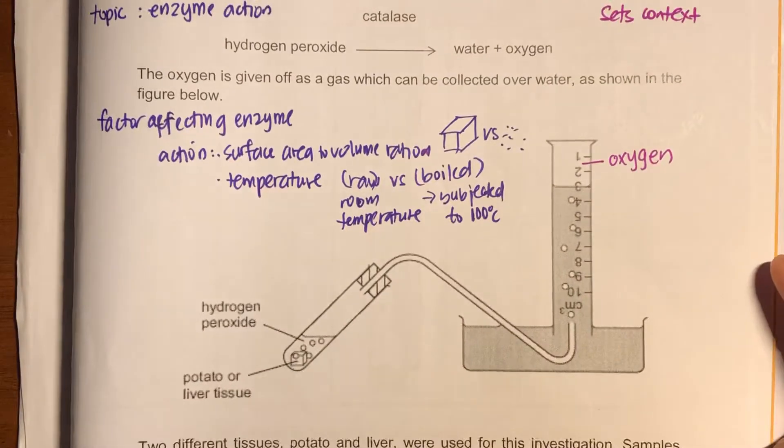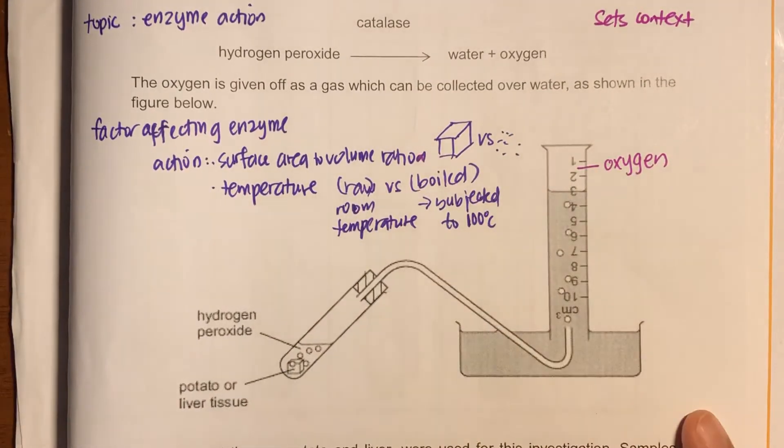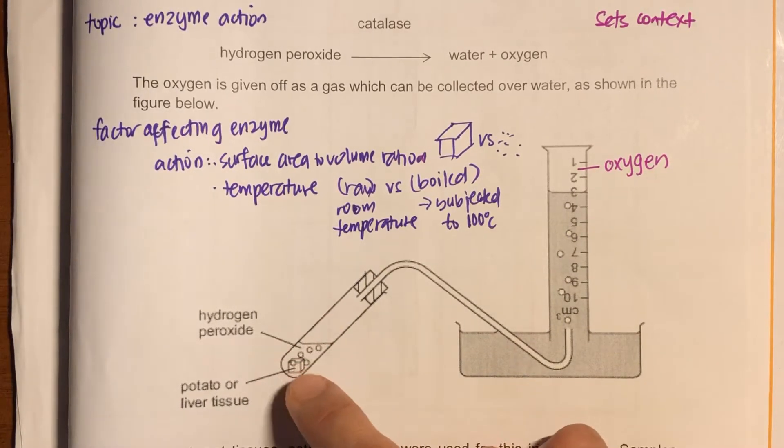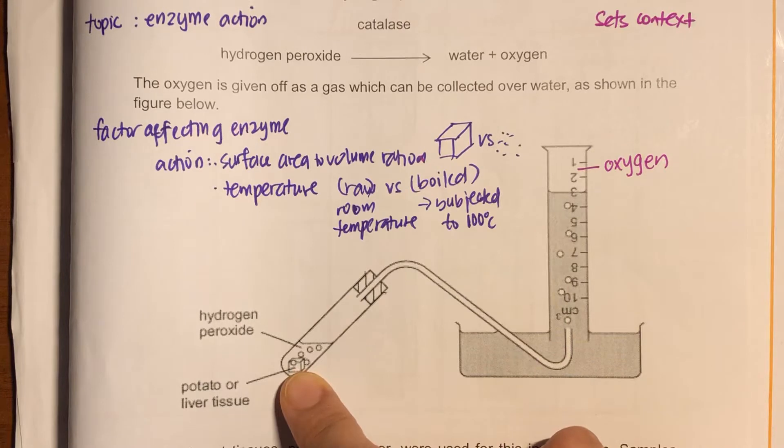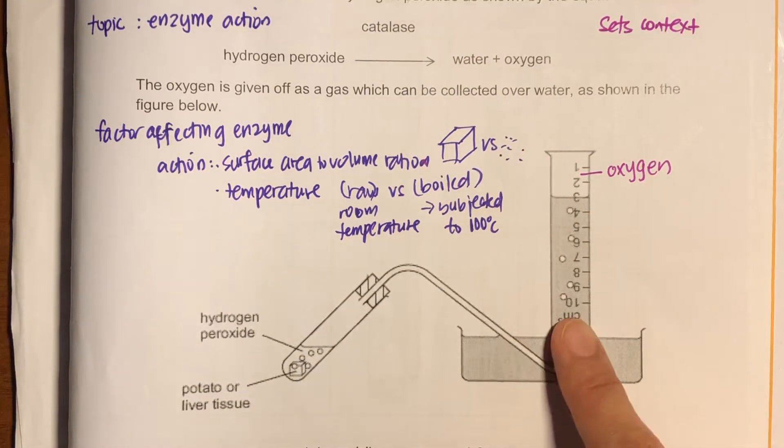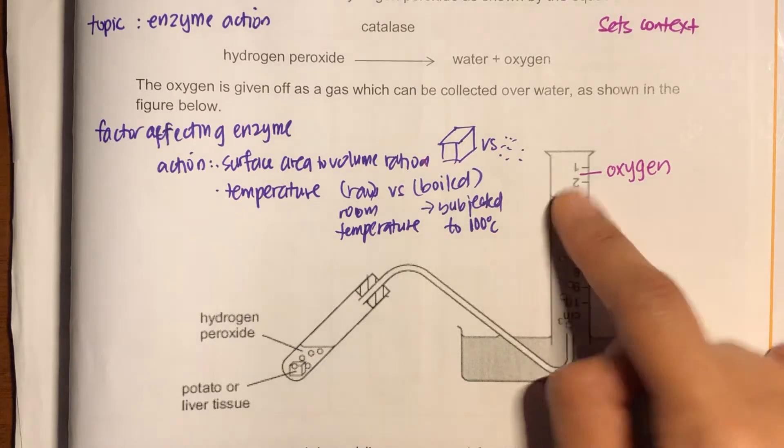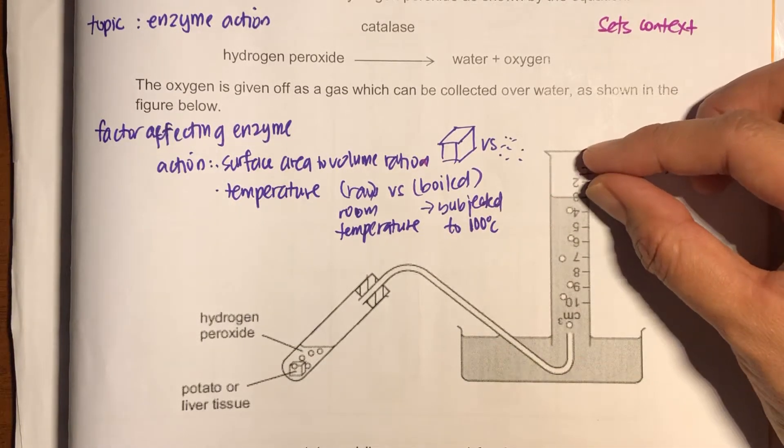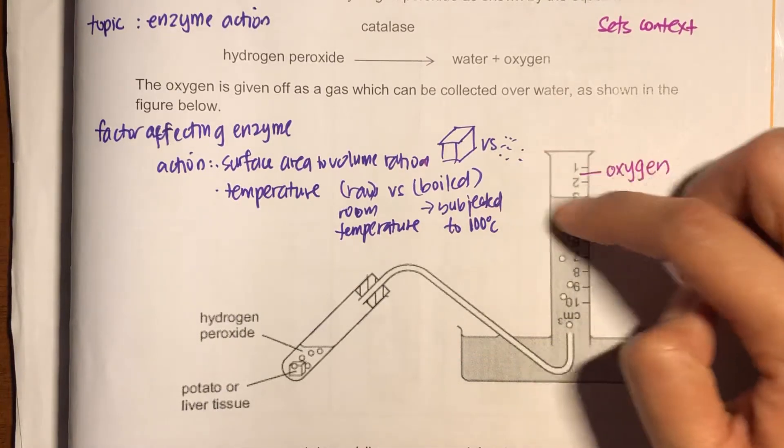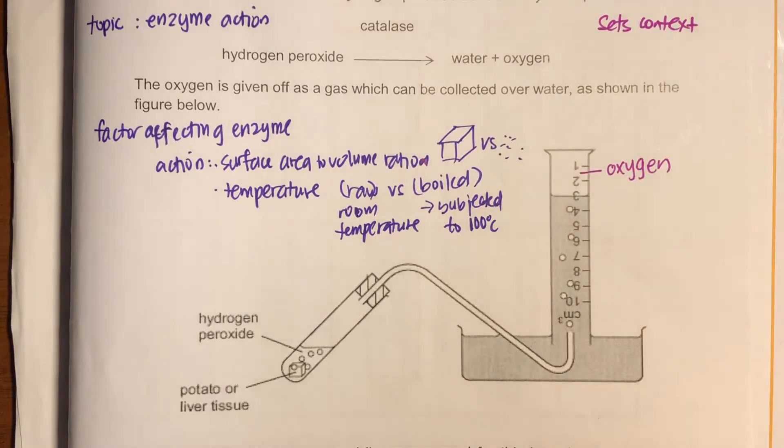Then you need to look at the experimental setup. This is hydrogen peroxide where they put either potato or liver. And when this reaction happens, oxygen will be bubbled through. And by displacement, the volume of liquid will change because oxygen will fill up this space.